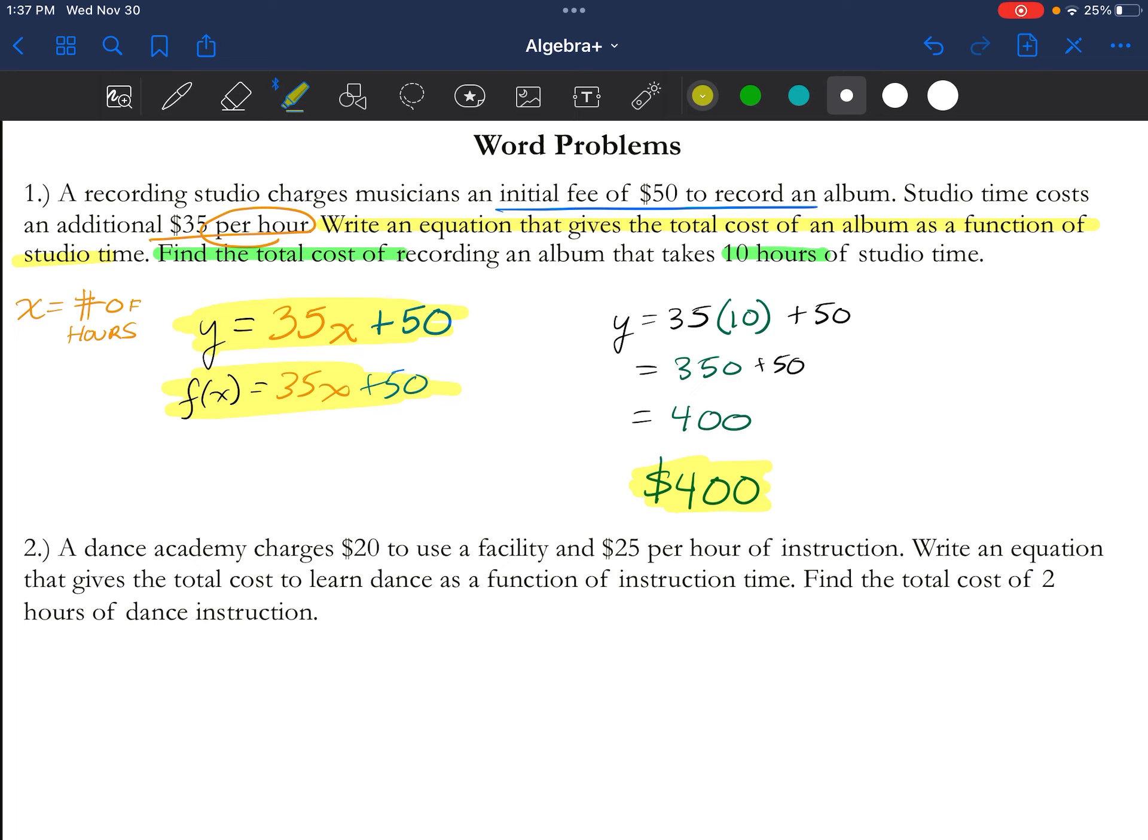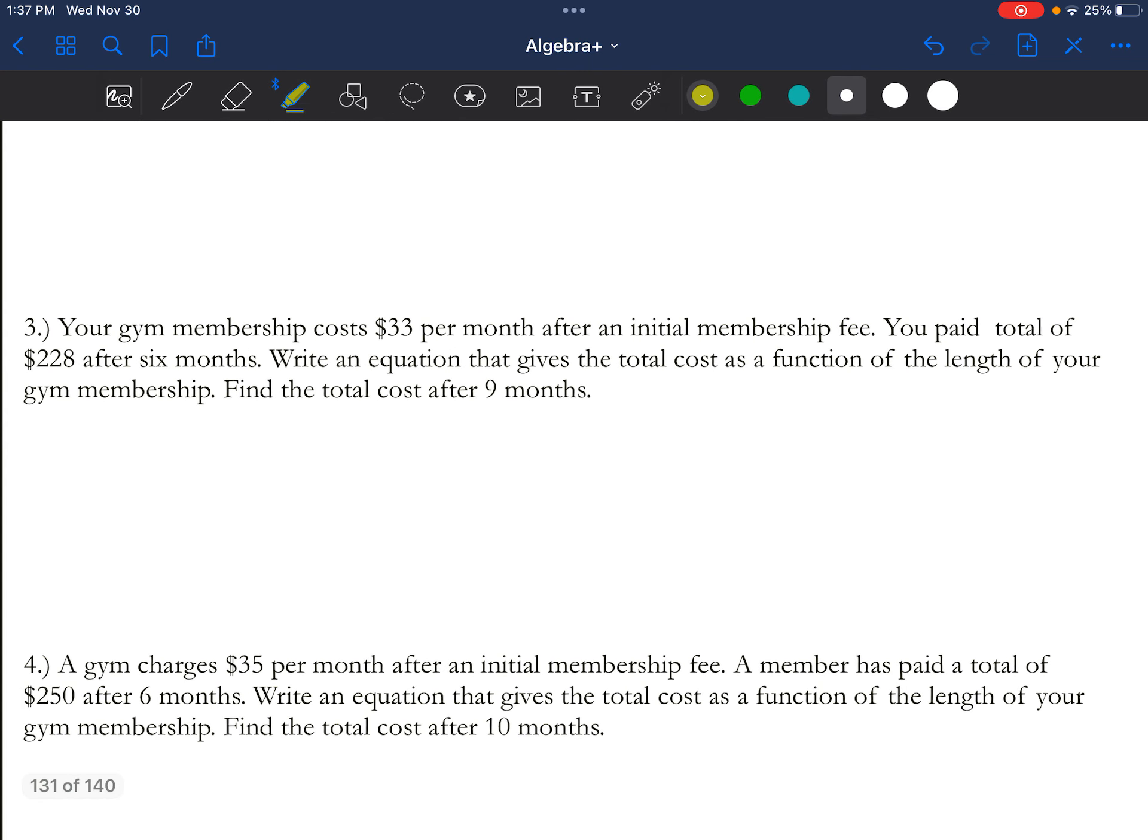And that's going to be your answer right there. So these are the straightforward words. You can immediately write it into slope-intercept form. Other times, we're going to go down to number three. It says gym membership costs $33 per month. Oh great, we have a slope right here, 33x. It says after an initial fee.